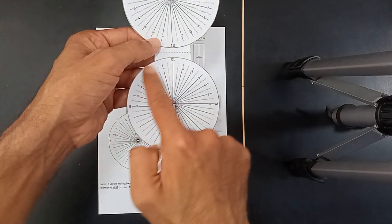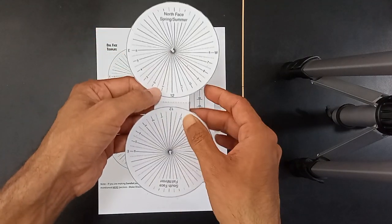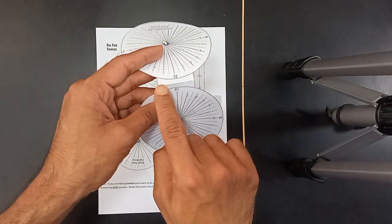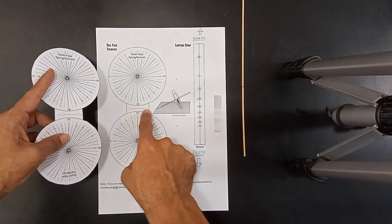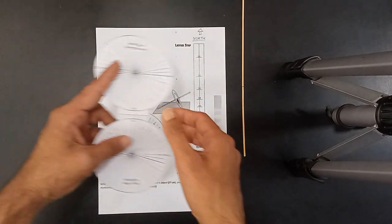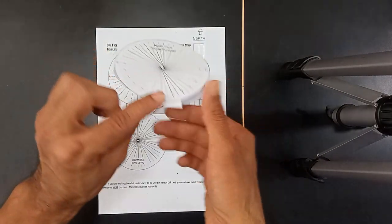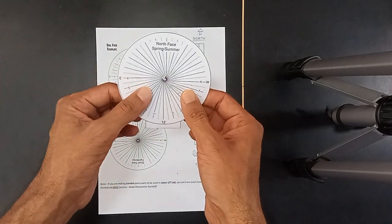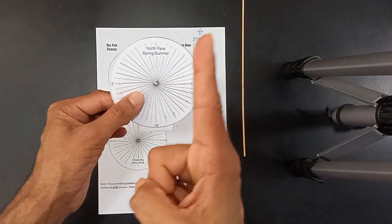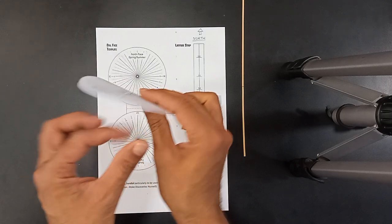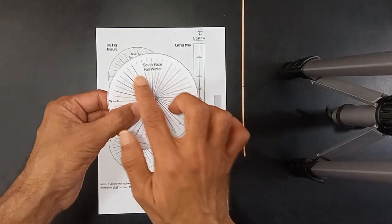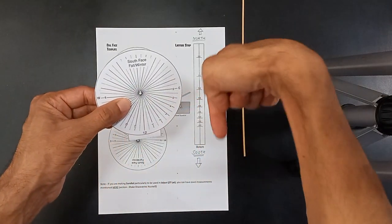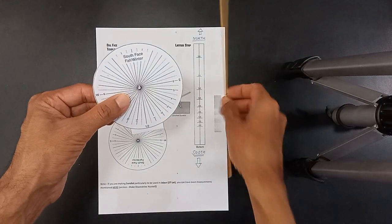The same is on the other face as well. Now what you have to do is fold it along this center line. You can see the center line over here. Fold it along the center line like this. The north face has to point northwards and the south face has to point southwards.